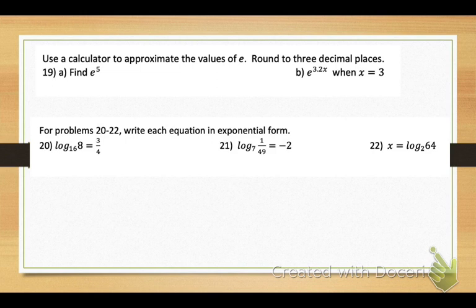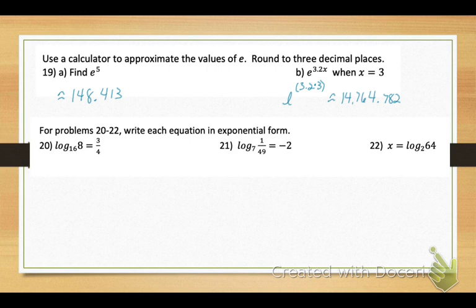Number 19: use your calculator to approximate values of e, which is approximately 2.72. Rounding to three decimal places: e to the fifth power is about 148.413. For e raised to 3.2x evaluated at x equals 3, that's e to the 9.6 power — approximately 14,764.782.